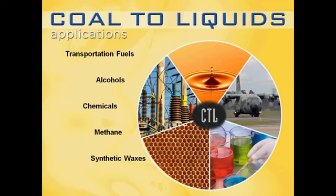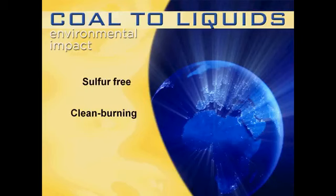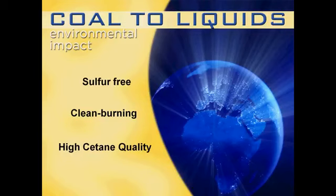Fischer-Tropsch synthesis can convert synthesis gas into a range of useful products such as transportation fuels, synthetic waxes, alcohols, chemicals, and methane. The waxes are used in many applications including adhesives, inks, textiles, and polishes. Because all sulfur is removed in the gasification process, the diesel is far cleaner than the Environmental Protection Agency's requirements. By using oxygen rather than air to gasify the coal, the gas stream is smaller and less diluted. With a more concentrated gas stream, cleanup is more efficient. The clean synthesis gas is used to produce clean-burning coal-to-liquid fuels.